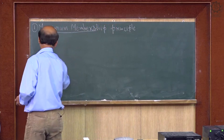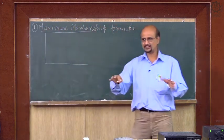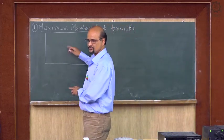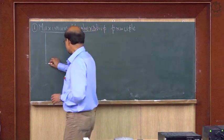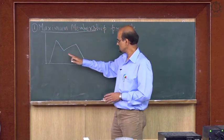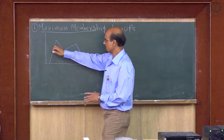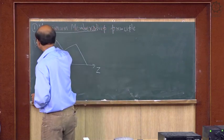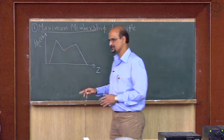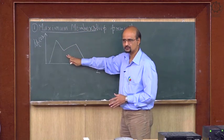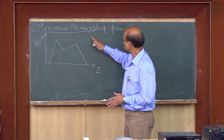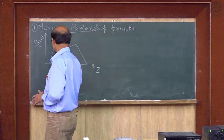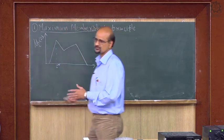Suppose c1 and c2 are two fuzzy sets — you aggregate them to get c1 union c2. Here suppose you have this type of output from a fuzzy process. If this is your z-axis and this is your mu_c_bar(z) membership function, after aggregating, this is your c-bar. This method says the maximum membership principle: the maximum point here is your z-star, the defuzzified value.